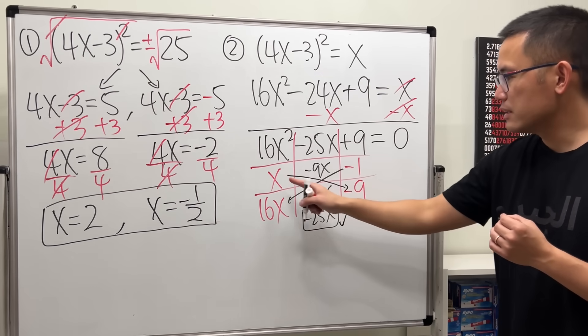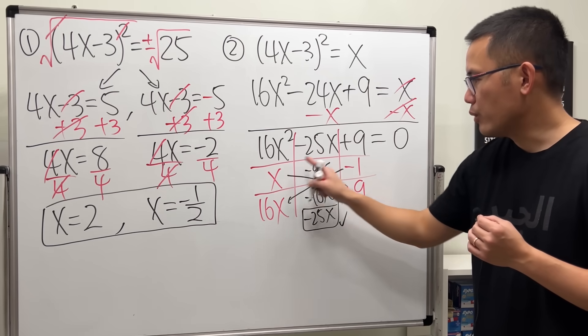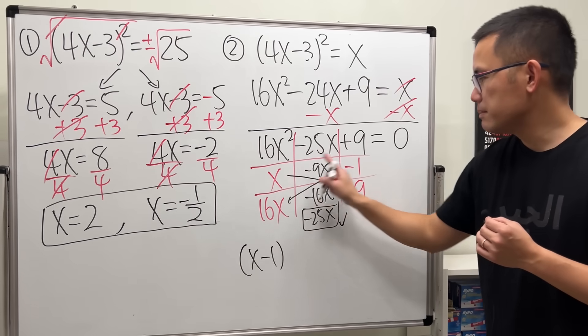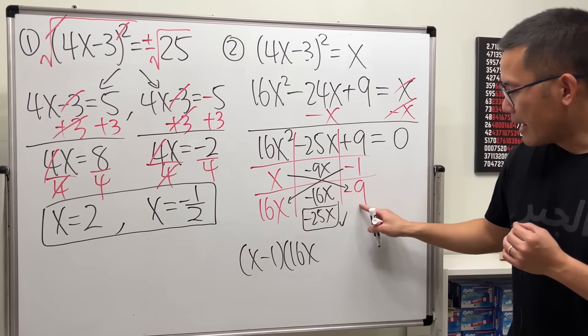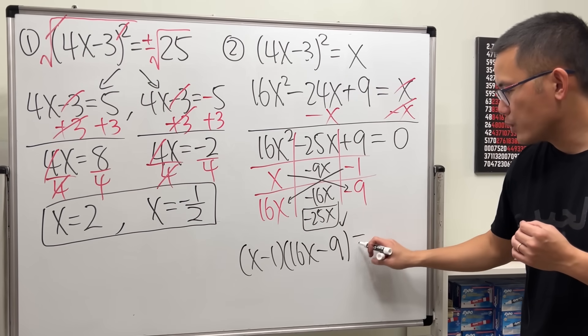Now, the factoring is x minus 1. You go across x minus 1. And, next is 16x minus 9. And, that's equal to 0.